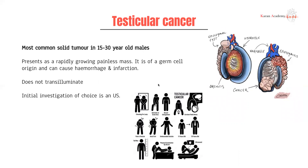Next, we have testicular cancer. It's the most common solid tumor in 15- to 30-year-old males and presents with a rapidly growing painless mass. Most commonly these tend to be of germ cell origin. If untreated, it can cause hemorrhage and infarction locally, and then systemic spread as well.